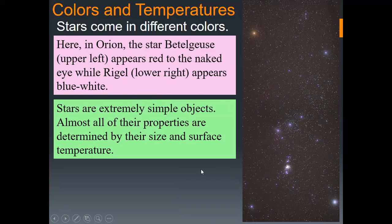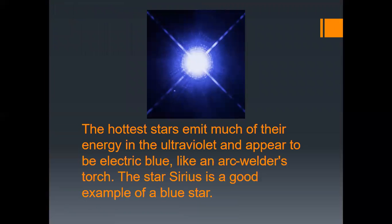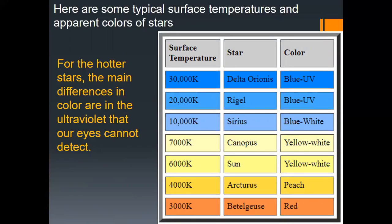Stars are extremely simple objects — almost all of their properties are determined by their size and surface temperature. The surface temperature of a star determines the relative intensities it emits at different wavelengths and thus its color. The hottest stars emit much of their energy in the ultraviolet and appear electric blue like an arc welder's torch — Sirius is a good example of a blue star. The cooler stars emit most of their energy in the infrared and appear red like a glowing electric stove element — Betelgeuse in Orion is a good example of a red star.